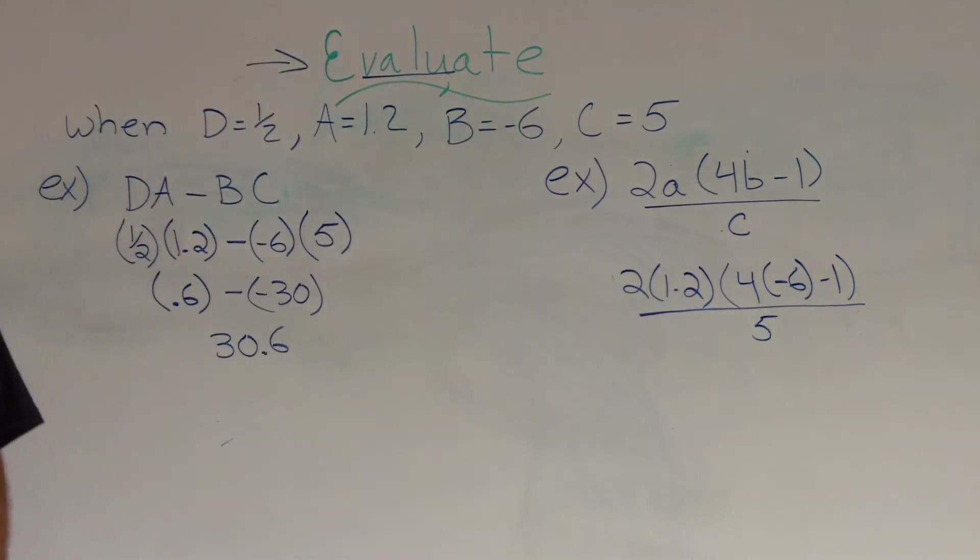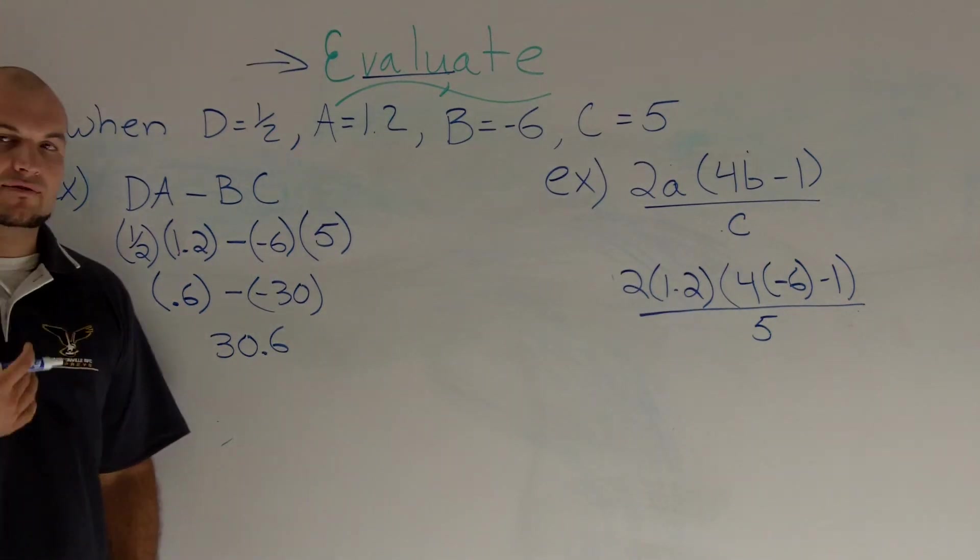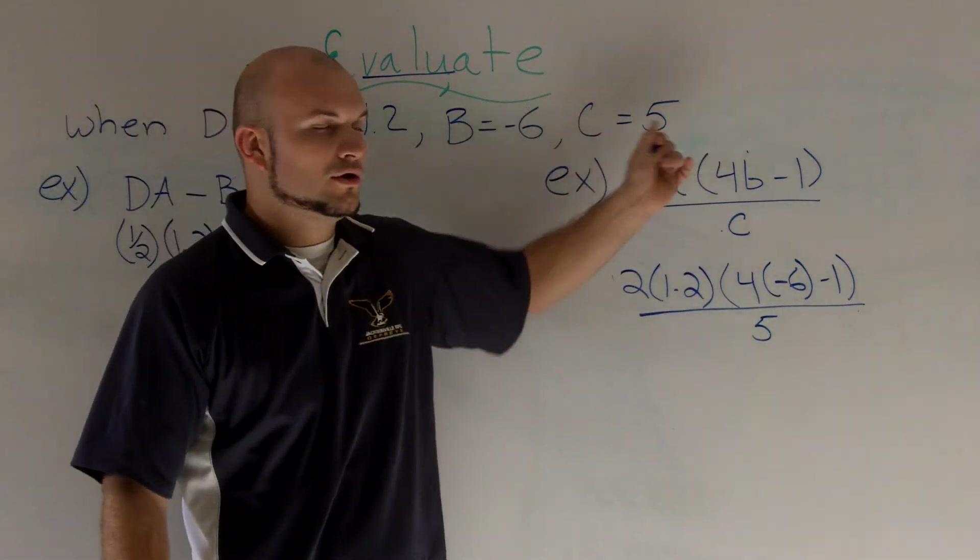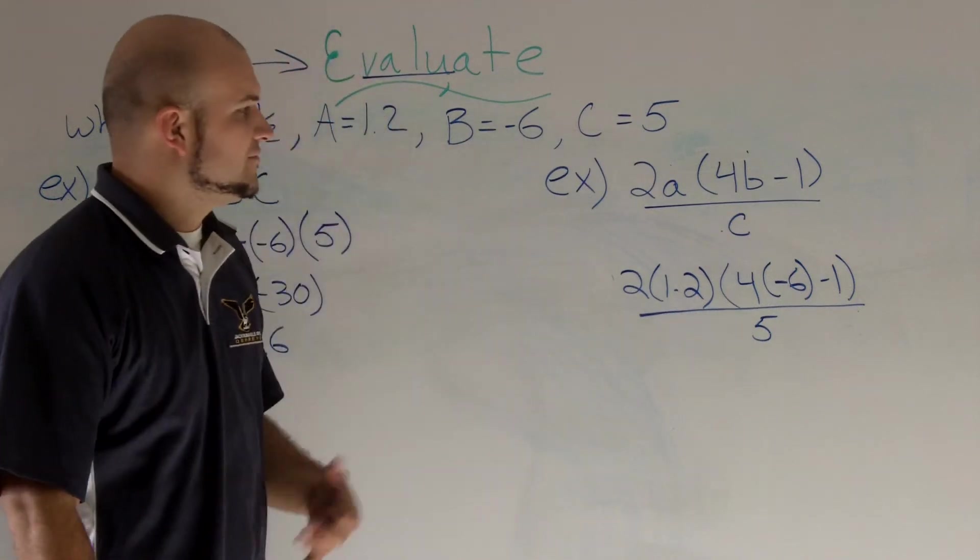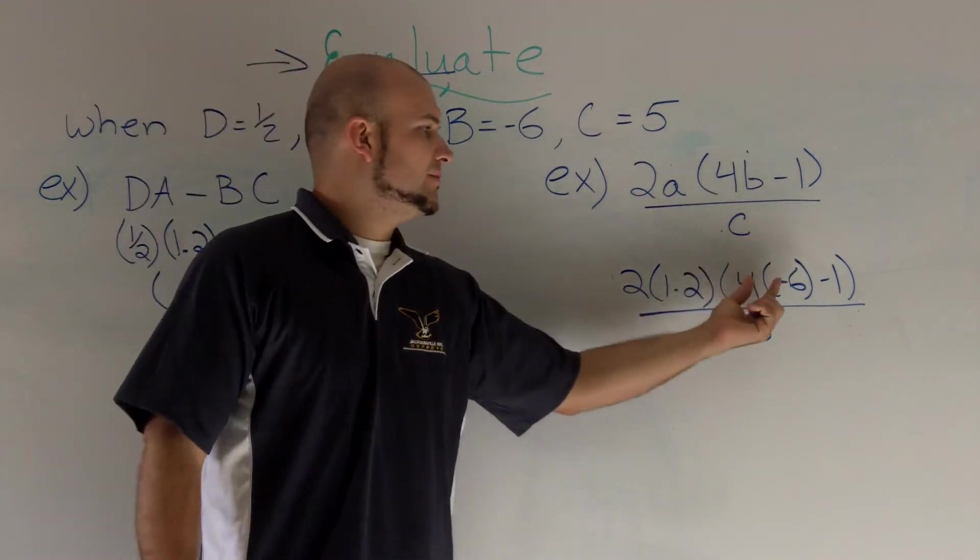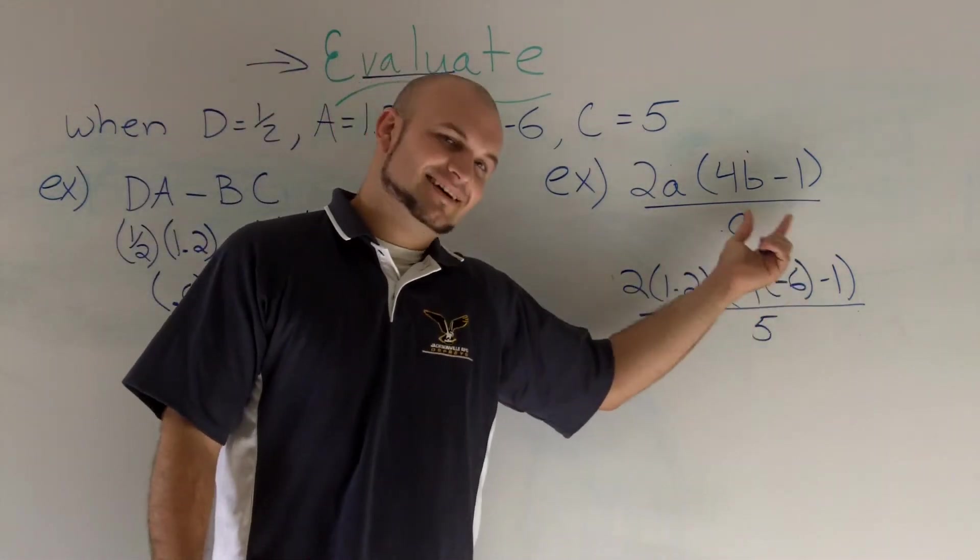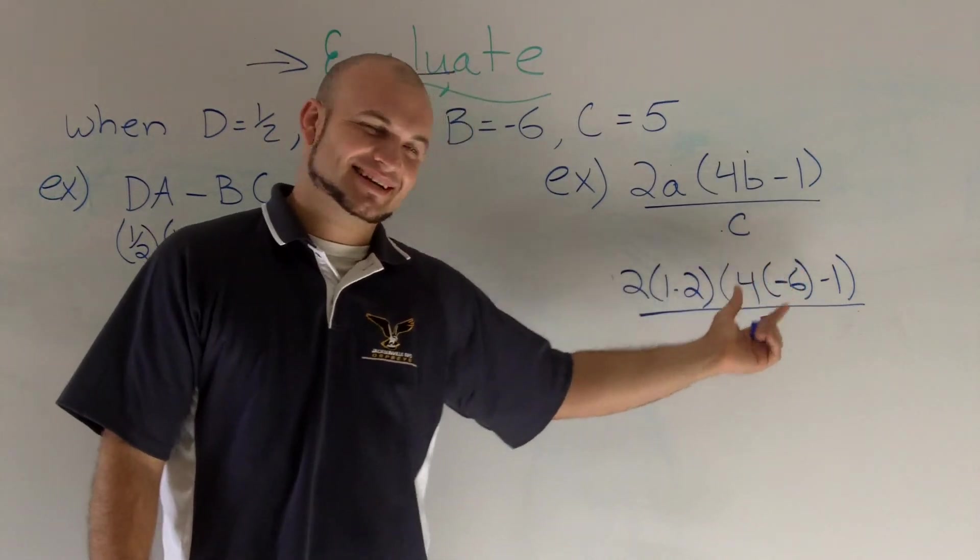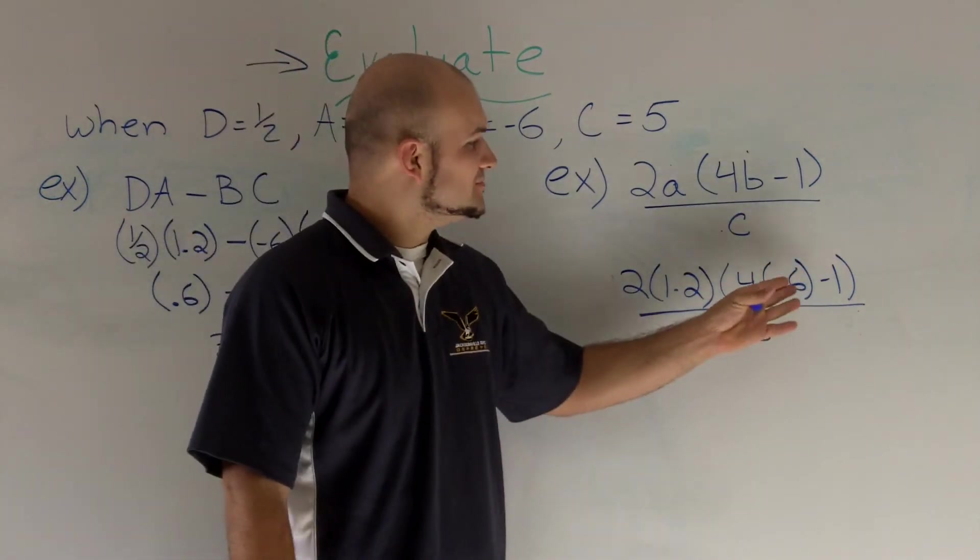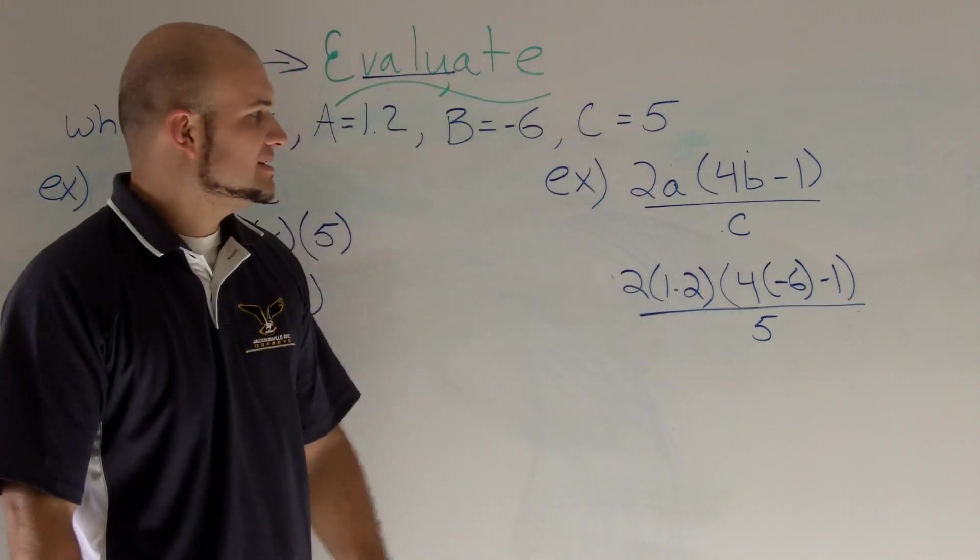Now the next thing we need to do is we need to make sure that we go ahead and do our order of operations. And so first thing we need to do is we need to make sure we evaluate within this parenthesis first. And that's very good. That's what you get for when we have a small. So we're going to evaluate inside that parenthesis.